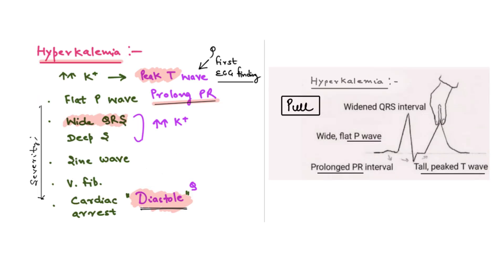Coming to hyperkalemia: if potassium levels go up, there is T wave increase — basically peaking of the T wave. You will also see prolongation of PR interval with flattening of P wave; the amplitude of P wave goes down but the duration of PR increases. So what is increasing in hyperkalemia? T wave amplitude increases, PR interval prolongs, and widening of QRS is seen. You have to remember three things that are increased: T wave, wide QRS, and prolongation of PR with increased level of potassium.